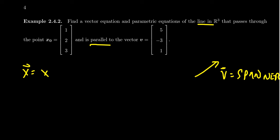X is going to equal X0 plus T times V right here, where X is some generic vector (X1, X2, X3). X0 is a specific vector, (1, 2, 3), that's on the line.